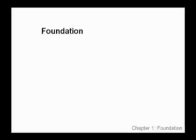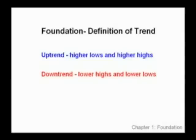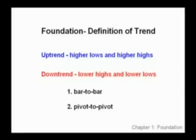The foundation of this course is built on the classical definition of trend. An uptrend is defined as a series of higher lows and higher highs, and a downtrend is defined as a series of lower highs and lower lows. This pertains to both a bar-to-bar scenario and a pivot-to-pivot scenario. Now I know you think this definition is very simple, but believe me we're going to get a lot of mileage out of this. Now let's take a look at a bar-to-bar scenario to start.